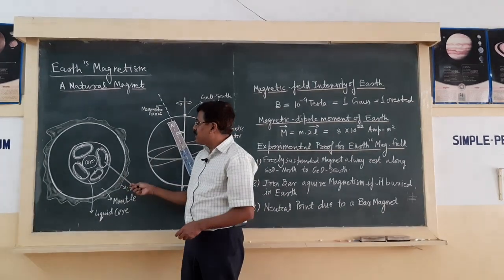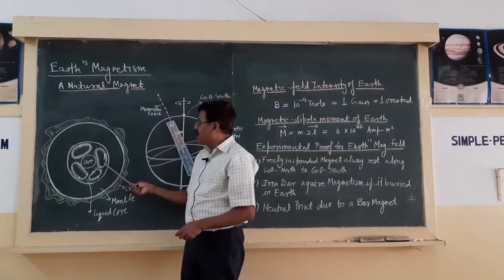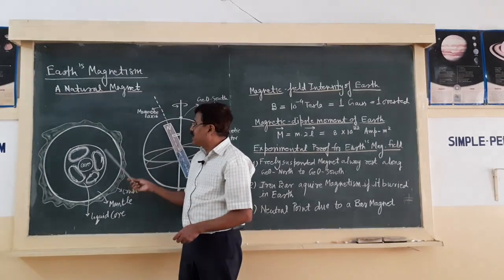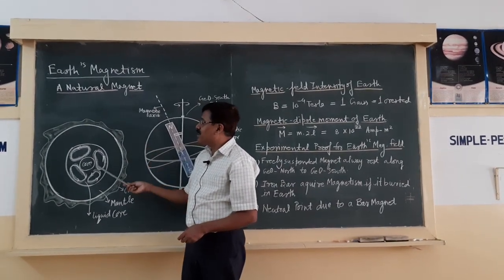And due to the circulation, current is there. Due to that current, magnetic field is there. So this is the most accepted theory for earth magnetism.